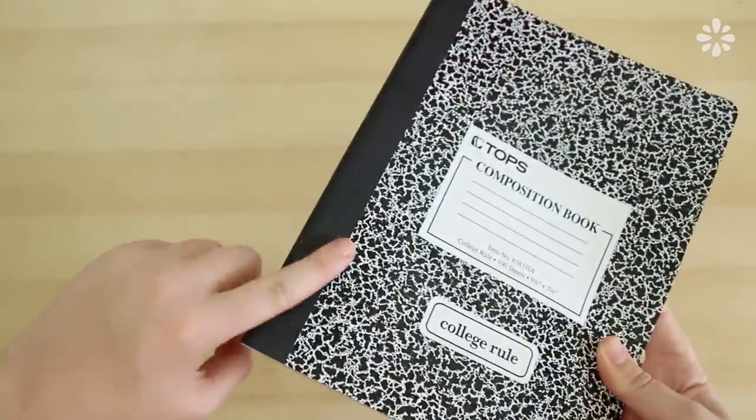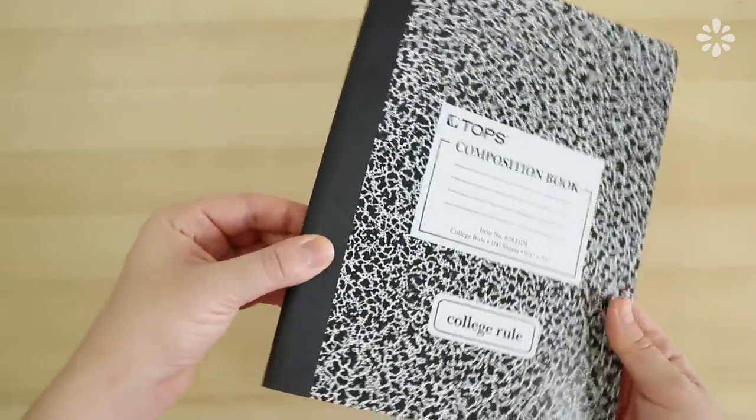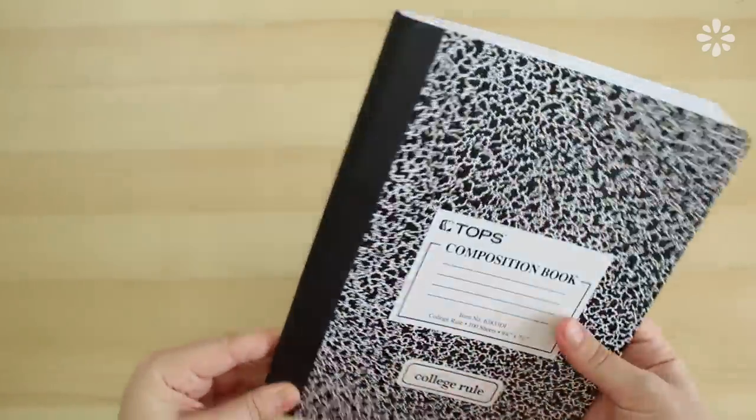The spine of the composition book is already protected pretty well so I'm going to leave that alone but if you want to add some design to that as well you can try wrapping it in decorative tape.